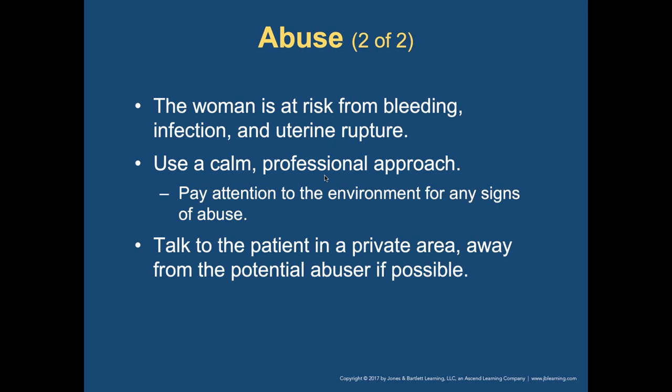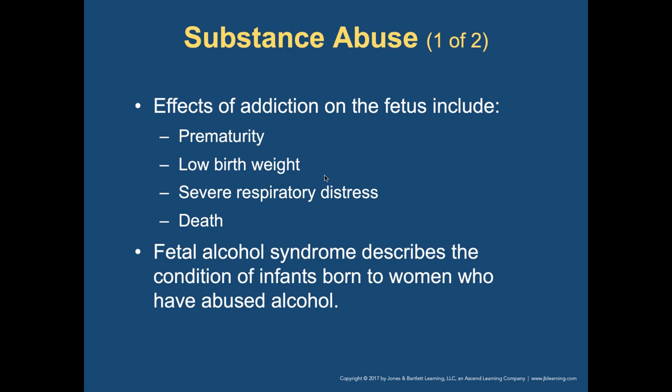The woman is at risk from bleeding, infection, and uterine rupture. Be calm and cool with them — they've just been through a traumatic event. Pregnant patients who are abused are often scared and may not be honest about how their injuries occurred. Talk to the patient, pull them aside, separate them from anyone else to find out what's going on. The best way to care for the fetus is to treat the mother. If needed, you can limit who rides in the back, and if things get serious, call for police.